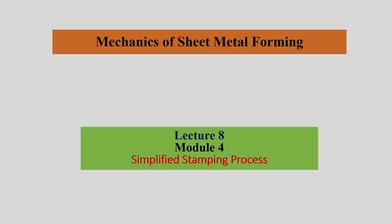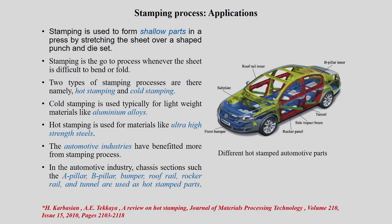We are going to start Module 4, called simplified stamping process or simplified stamping analysis. In this module, which we will complete in this session, we will see how to do a simplified analysis of a stamping process — certain things we have already studied and certain new things will be introduced, and we will apply what we discussed before to this simple stamping analysis.